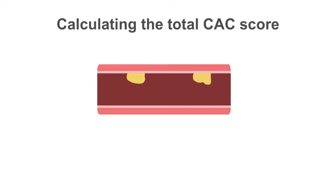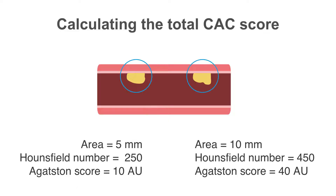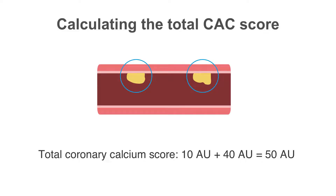Here we can see how this multiplication factor comes into play. If we take a vessel with two sequential calcified plaques: the first has a Hounsfield unit score of 250, so the multiplication factor will be 2, multiplied by the area of the plaque, giving a total value of 10 Agatston units. For the second plaque, the mean Hounsfield number is 450, so the multiplication factor is 4, multiplied by the area of 10, to give 40 Agatston units. The total coronary artery calcium score is the sum of the Agatston score for every calcified plaque within the coronary arteries — in this case, 50 Agatston units.